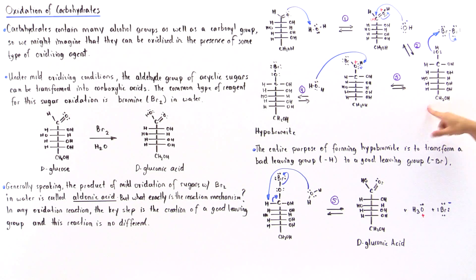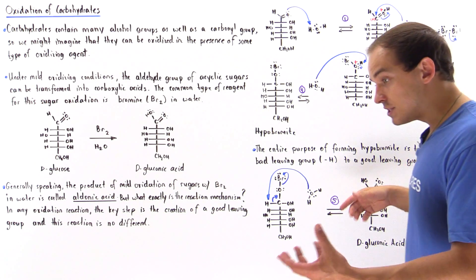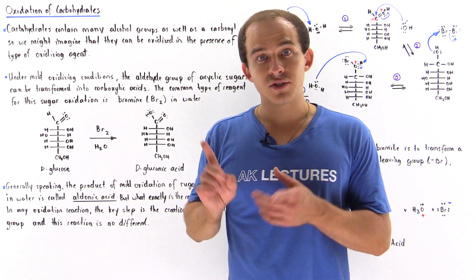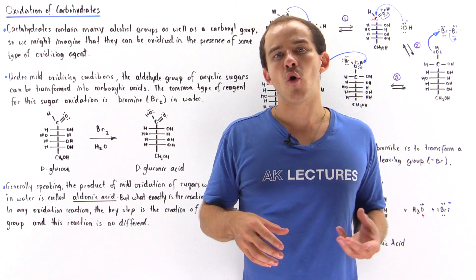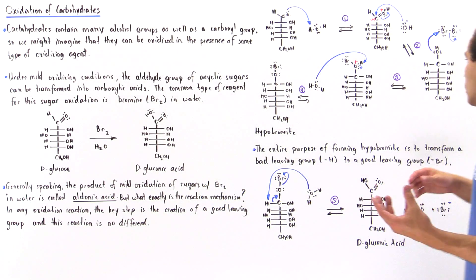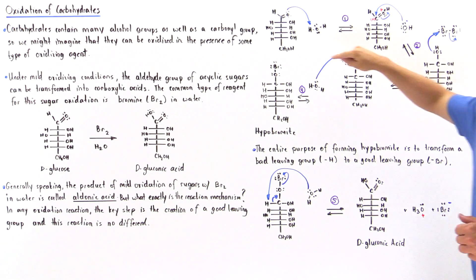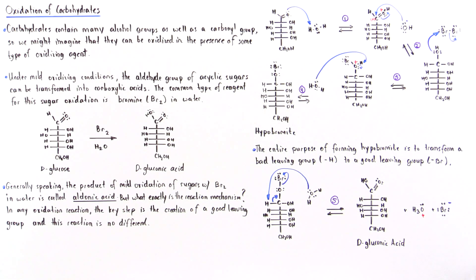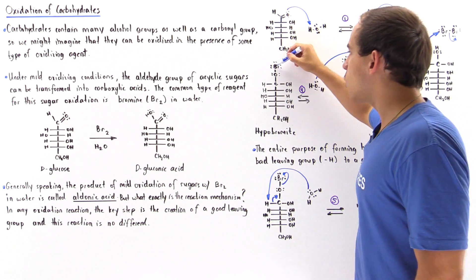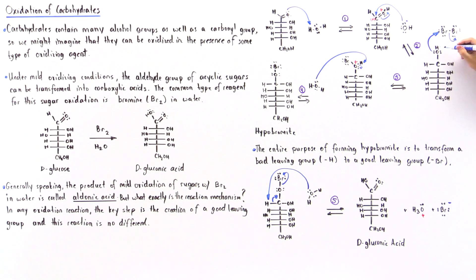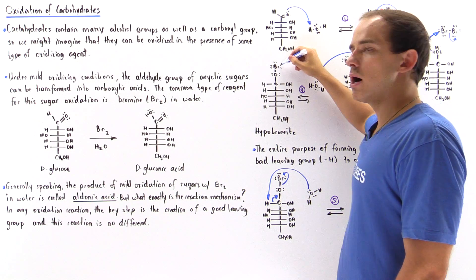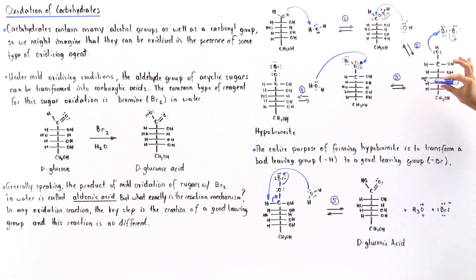In step three and step four, the entire premise of these two steps is to basically transform a poor leaving group, which is basically our H, into a good leaving group, our bromide. In step three to step four, this atom here is replaced with our bromide. This H is a poor leaving group, but this Br is a much better leaving group.